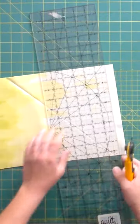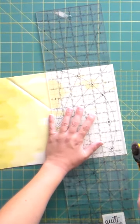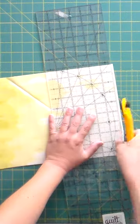A fat eighth is an eighth yard cut of fabric that's been cut across the fabric fold, so it measures 9 inches by 22 inches.